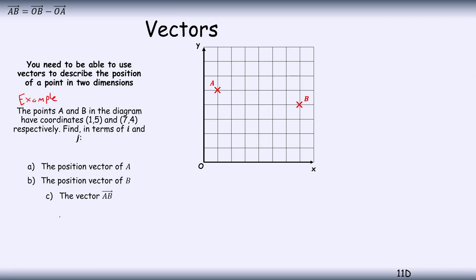So position vector a here, position vector of A, is OA. OA is given by the x value which is one, so that's just one i, or i, and then it goes up one, two, three, four, five squares, so plus 5j.